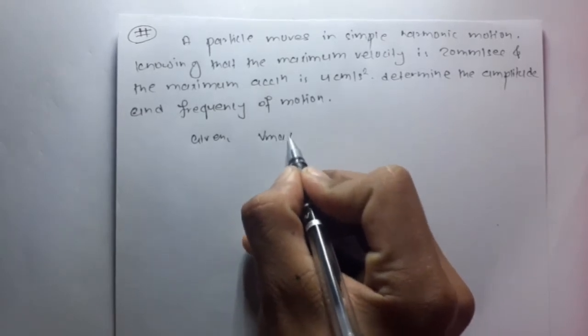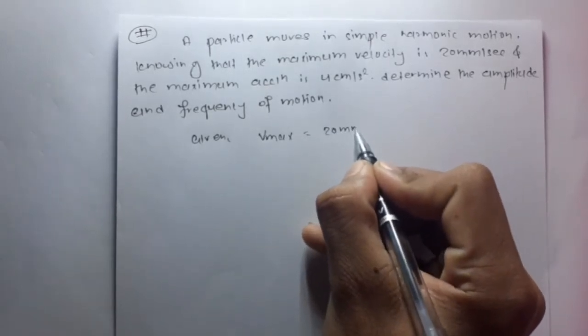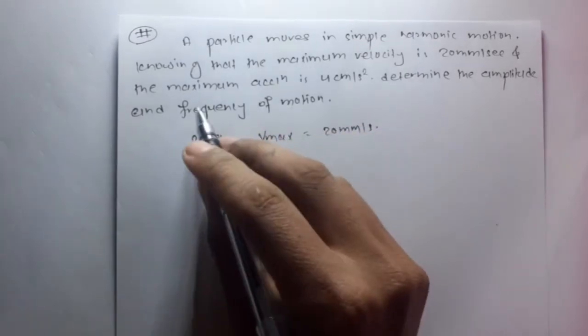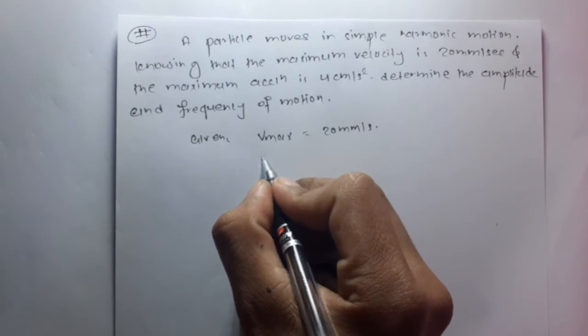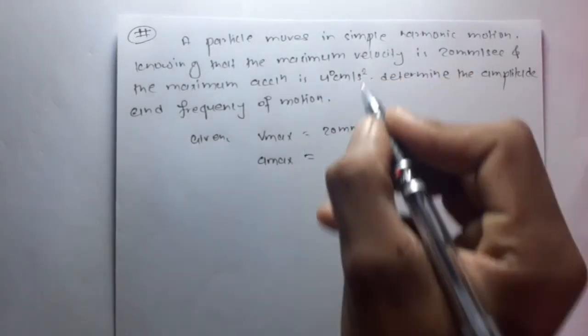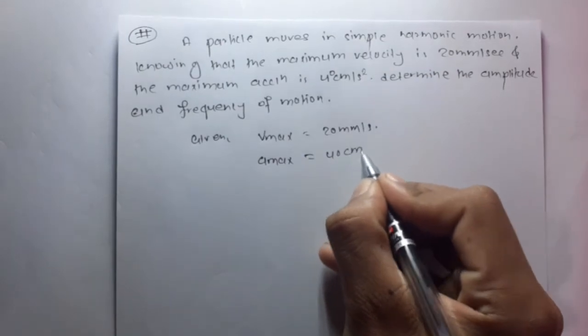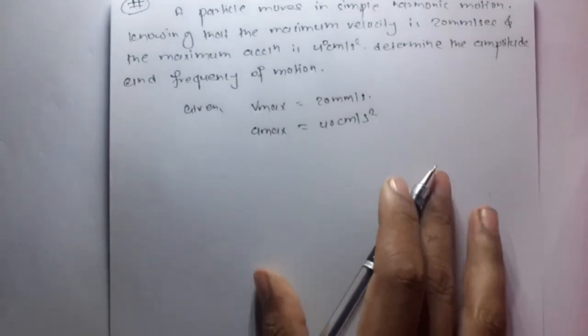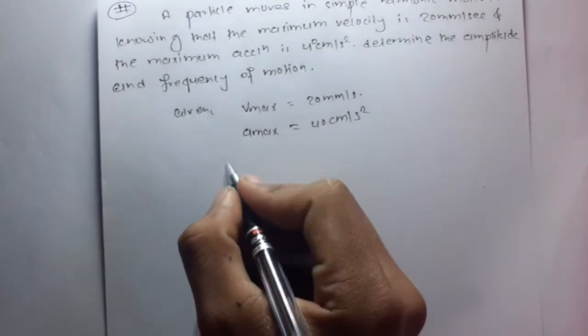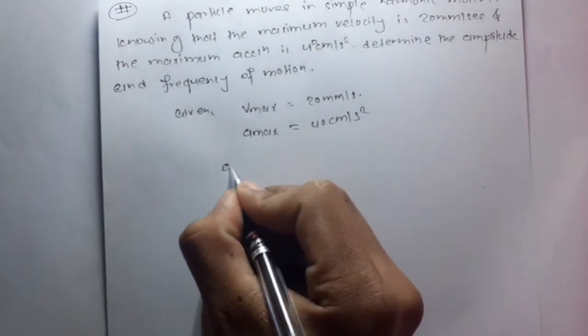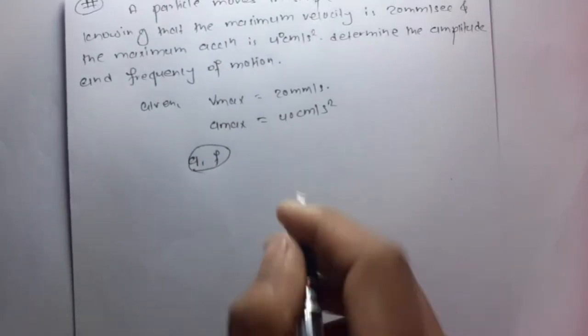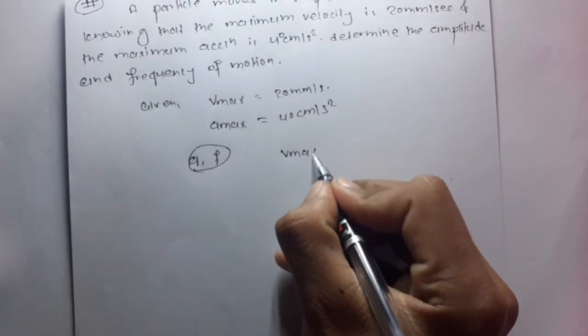max is 20 mm per second, and the maximum acceleration, amax, is 40 cm per second squared. We have to find the amplitude A and frequency F. For that, we know Vmax